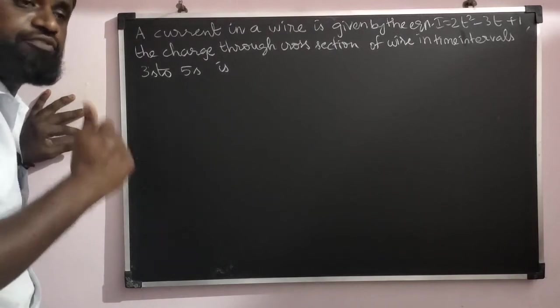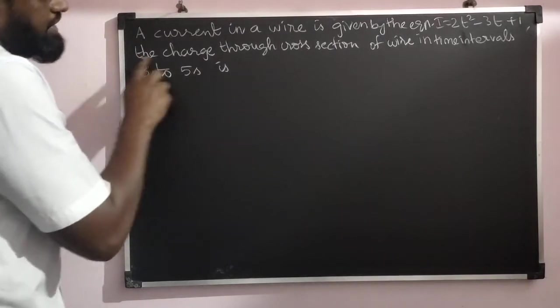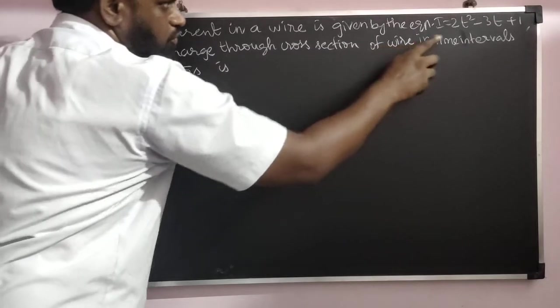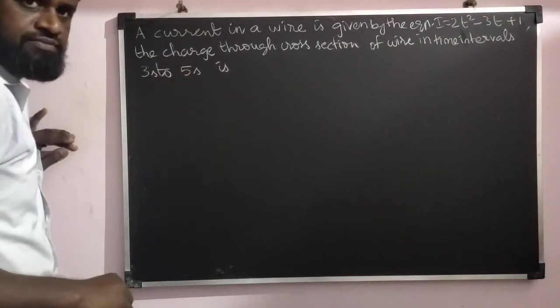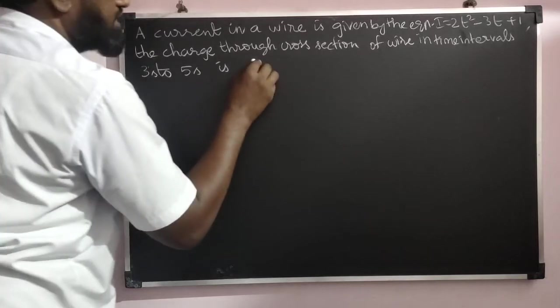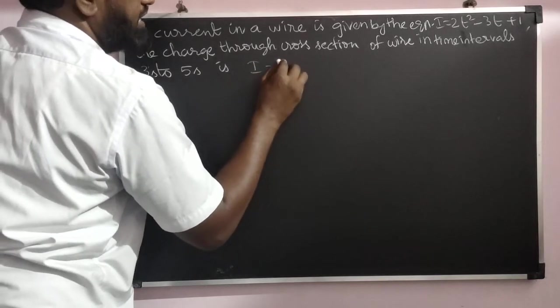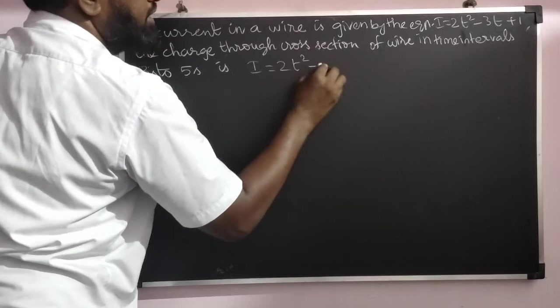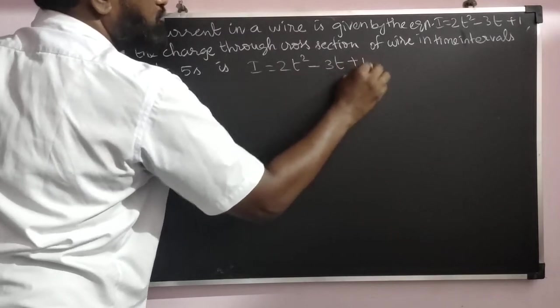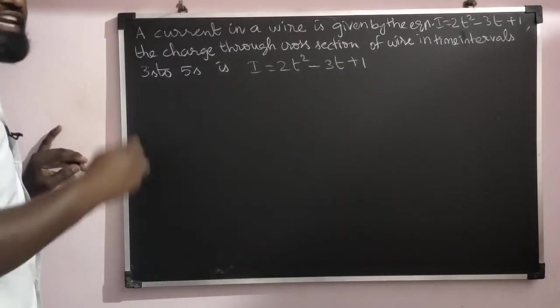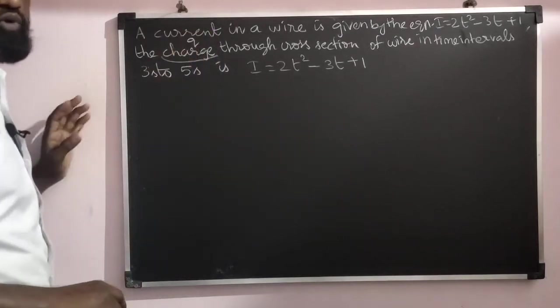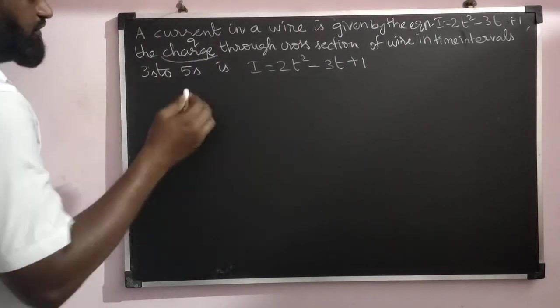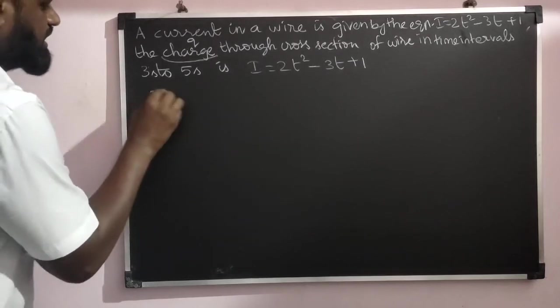The charge through cross-section of wire in time interval of 3 seconds to 5 seconds. They give the current i = 2t² - 3t + 1. We need to find out the charge q, amount of charge.